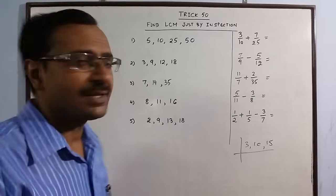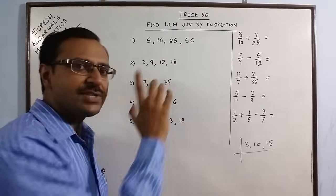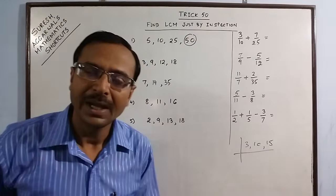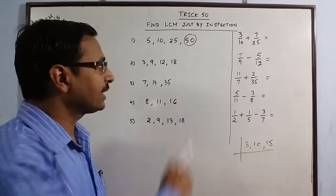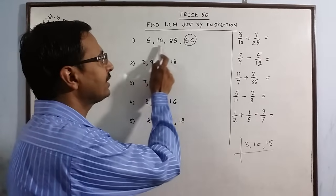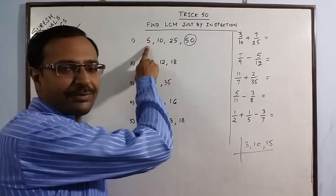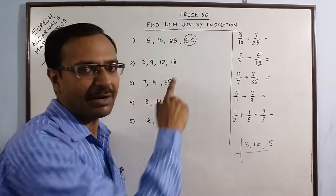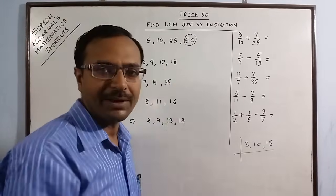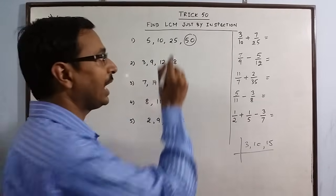First of all, you must inspect the numbers which are given and check which is the highest number. In this first case you have 50 as the highest number. Now after marking the highest number, you have to see how many other numbers have 50 as its multiple. If we write the table of 5, 5 tens are 50. If we write the table of 10, 10 fives are 50. If we write the table of 25, 25 twos are 50. So all these numbers are multiples of the highest number 50.